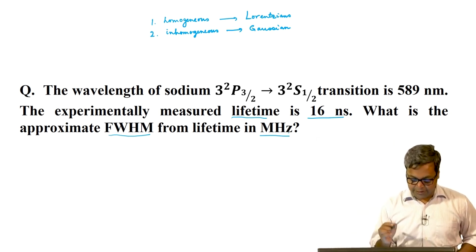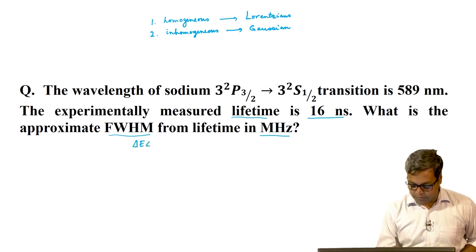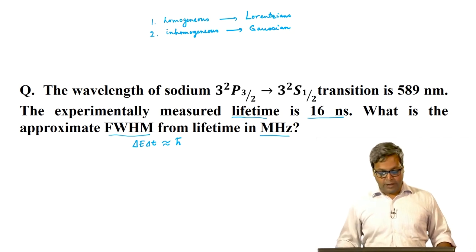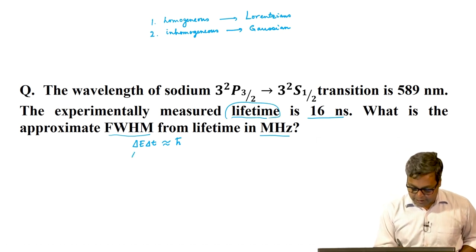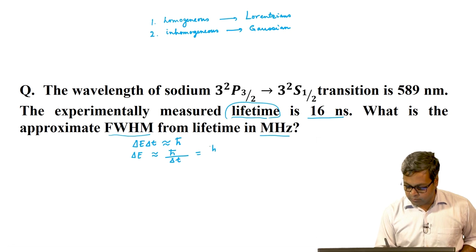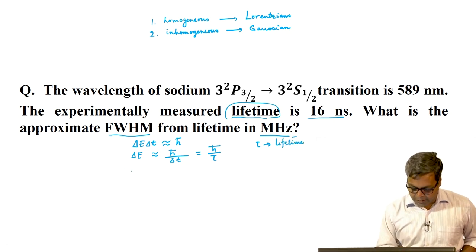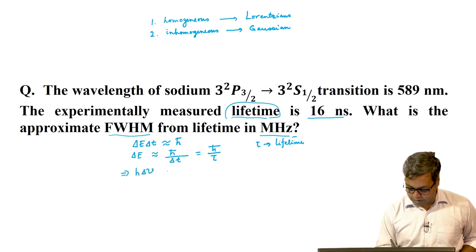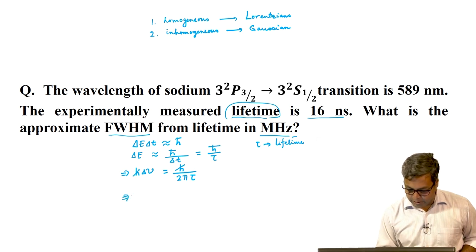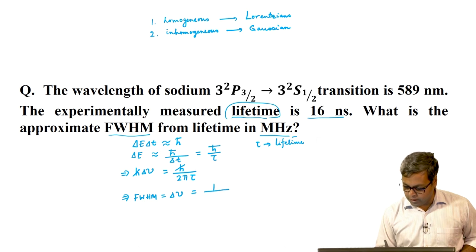From Heisenberg's uncertainty principle, we can write delta E times delta T approximately equals H-cross. Delta T is the time the molecule survives in the excited state, that is the lifetime tau. So, delta E approximately equals H-cross divided by tau. We can write delta E as H times delta nu, which equals H divided by 2 pi tau. Cancelling H, the full width at half maximum is delta nu equals 1 divided by 2 pi tau.